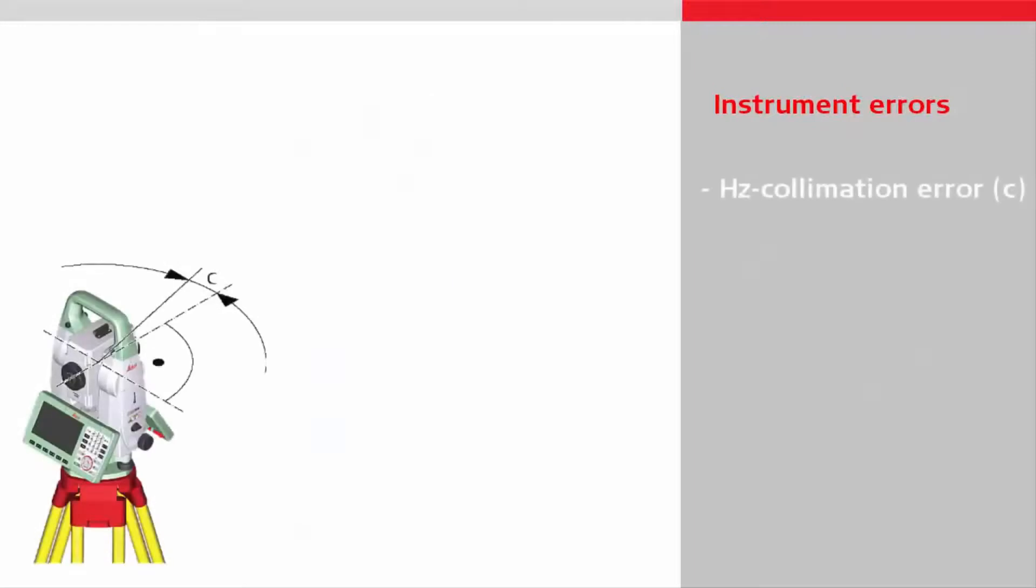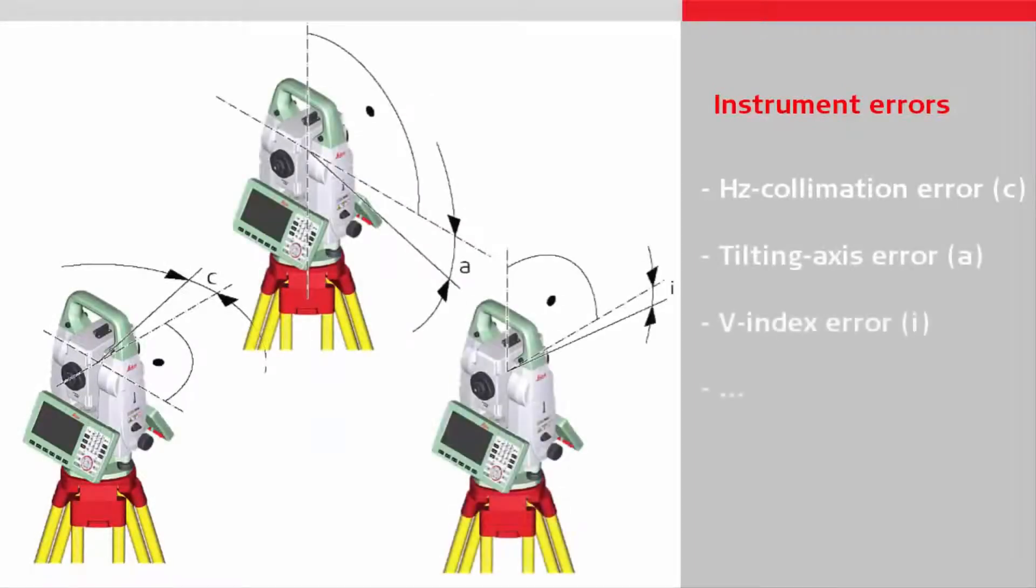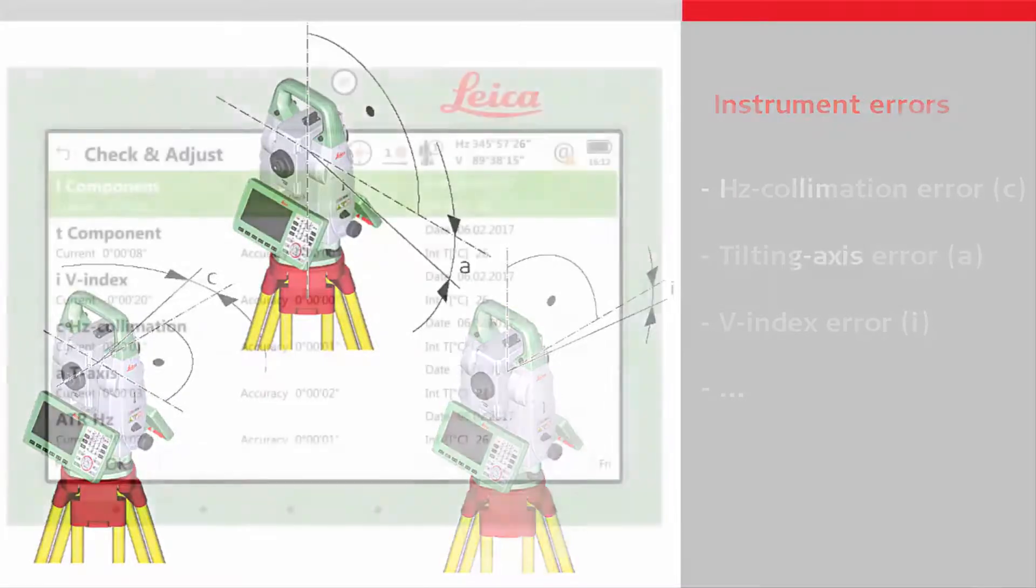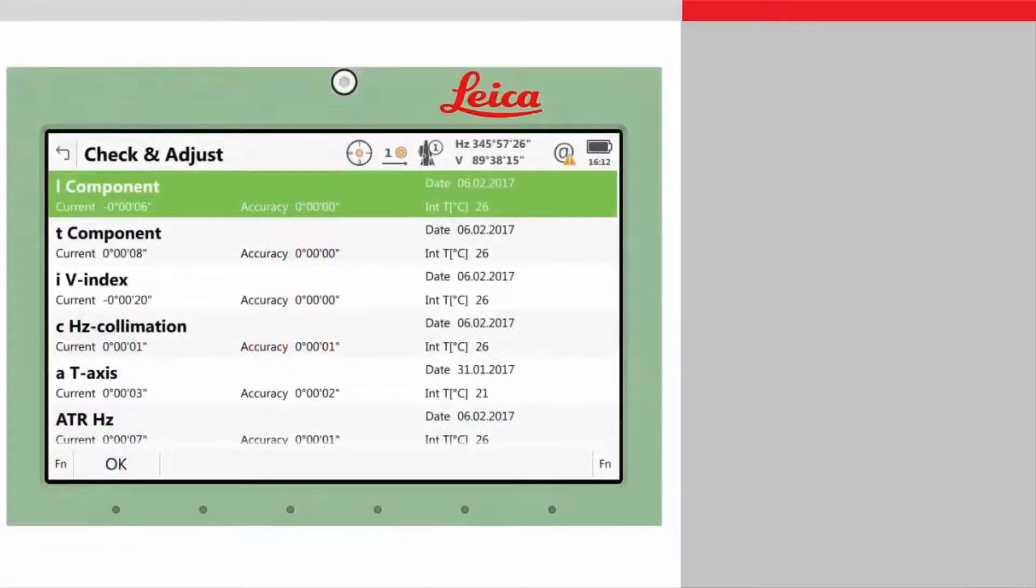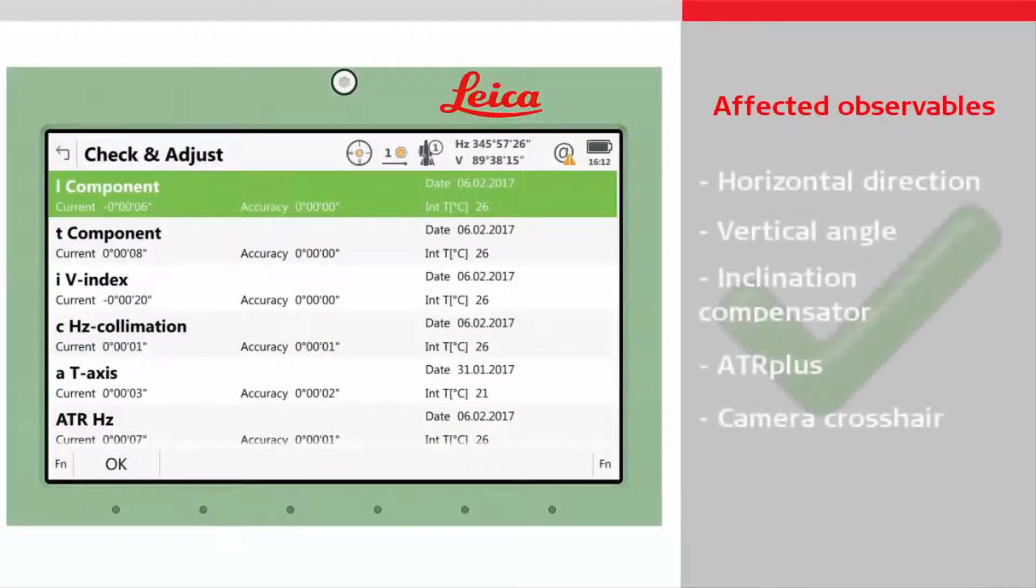These instrument errors, like the horizontal collimation error, tilting axis error, or vertical index error, can affect the measurements and therefore lead to wrong results if they are not properly considered. At the end of the manufacturing process, any instrument errors are carefully determined and adjusted so that the measurement results are correct and reliable.